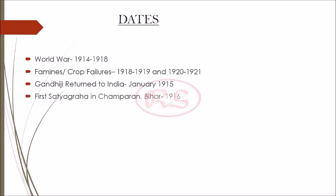After that, for 3 years he did Satyagraha in different places in our country. In 1916 he did his first Satyagraha in Champaran, Bihar. Second was in the Kheda district of Gujarat in 1917, and last in 1918 in Ahmedabad for the cotton mill workers.